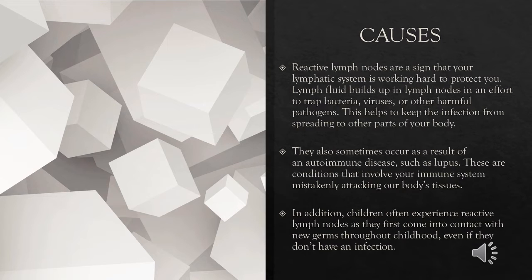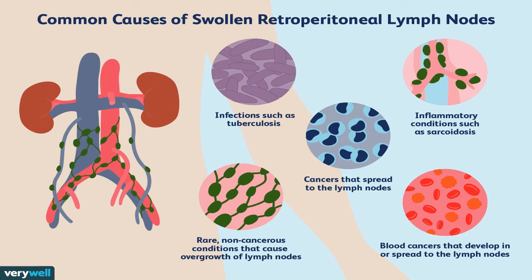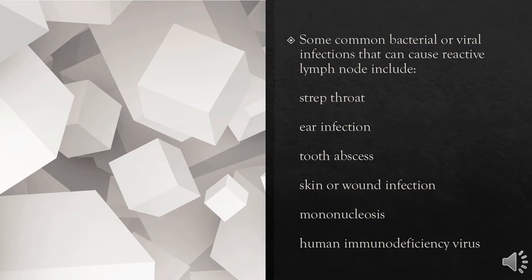Reactive lymph nodes sometimes occur as a result of an autoimmune disease such as lupus — conditions that involve your immune system mistakenly attacking your body's tissues. Children often experience reactive lymph nodes as they first come into contact with new germs throughout childhood, even if they don't have an infection. Common bacterial or viral infections that can cause reactive lymph nodes include strep throat, ear infection, tooth abscess, skin or wound infection, mononucleosis, and human immunodeficiency virus.